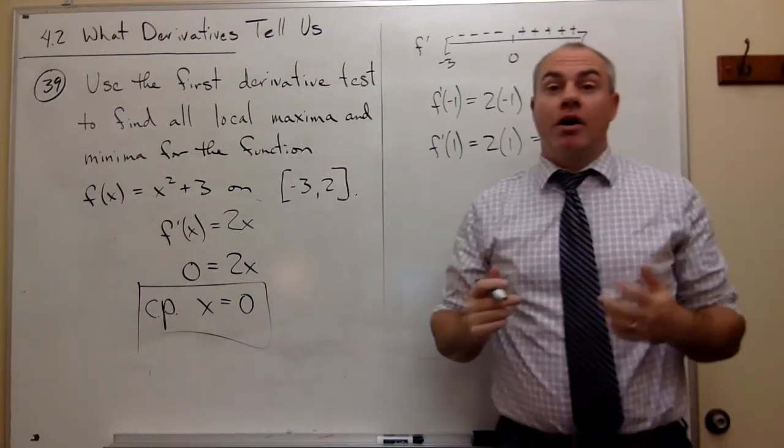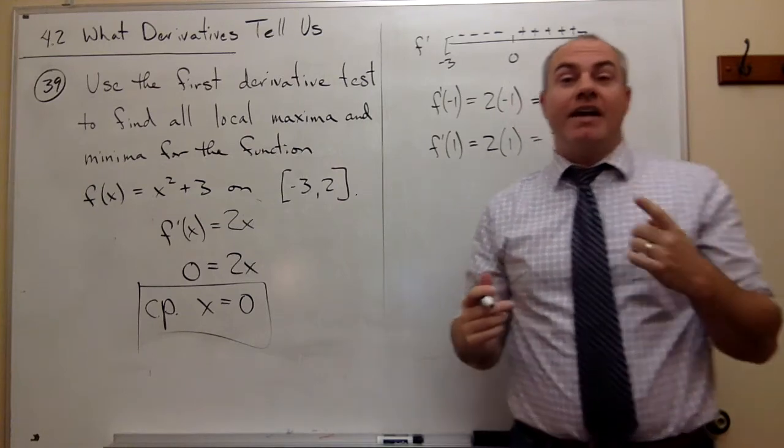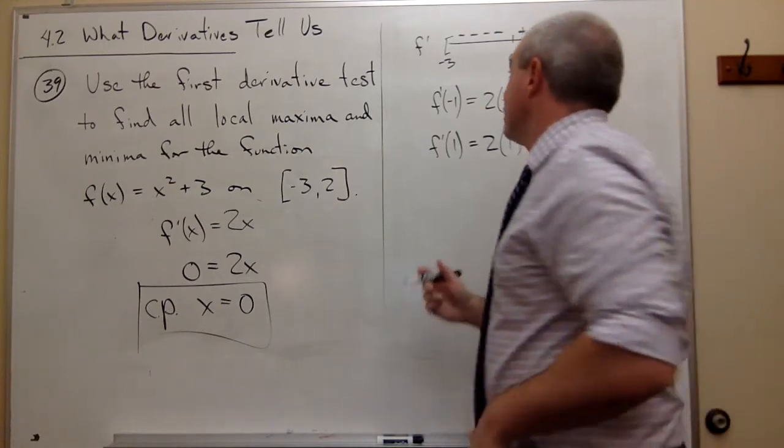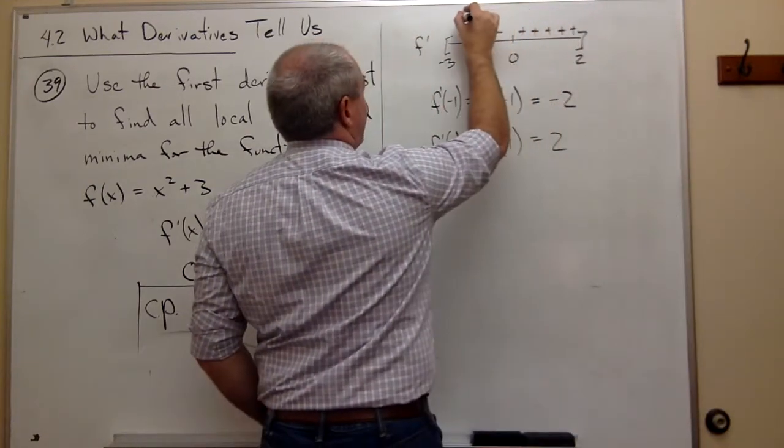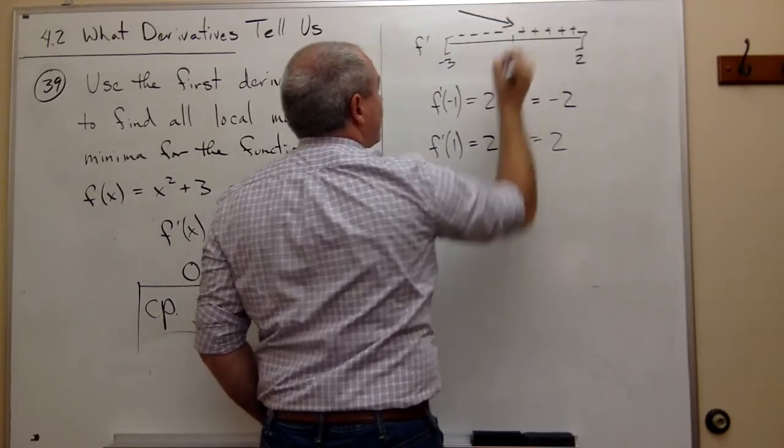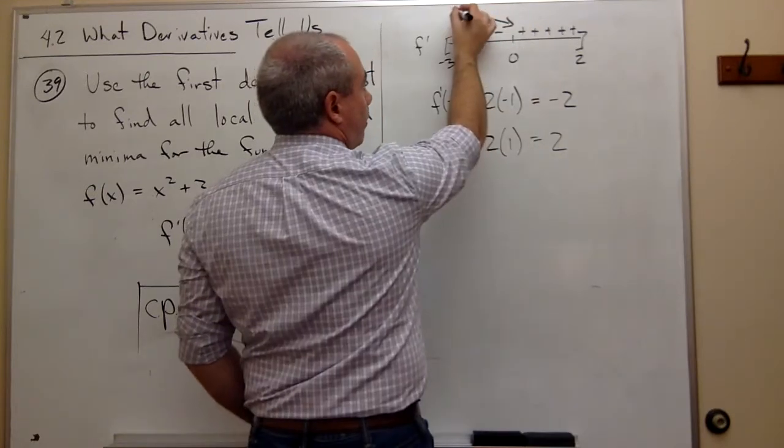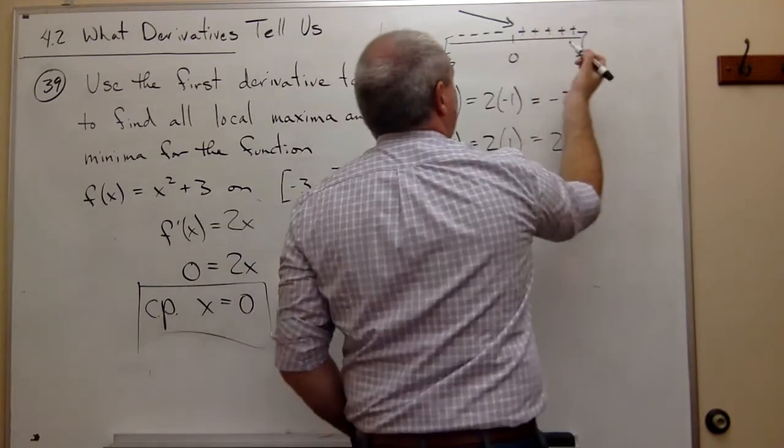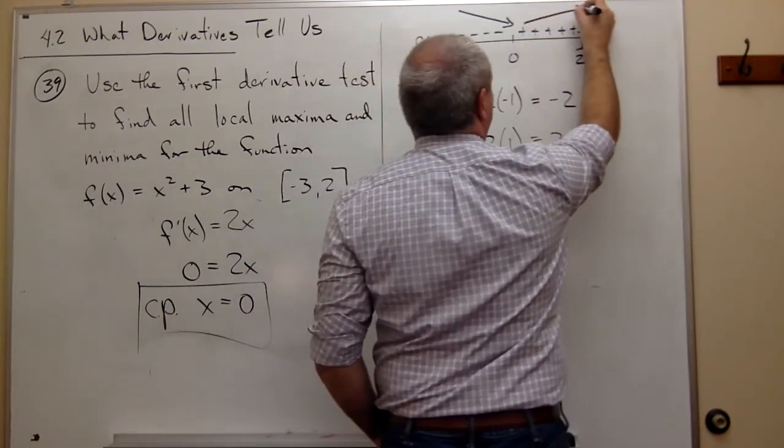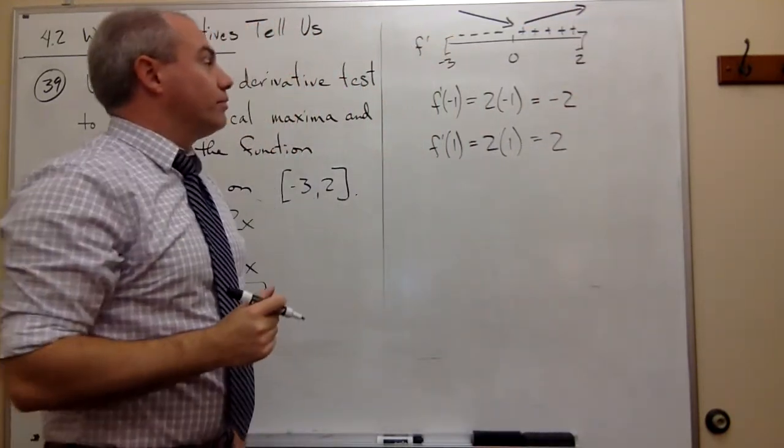Remember, positive means going up and negative means going down. So I'm going to draw arrows: a downward arrow from left to right for the negative interval, and an upward arrow from left to right for the positive interval.